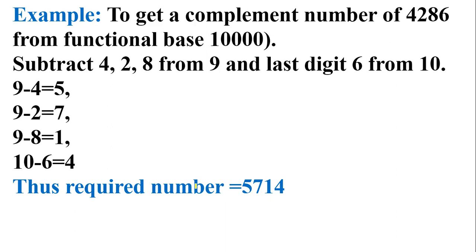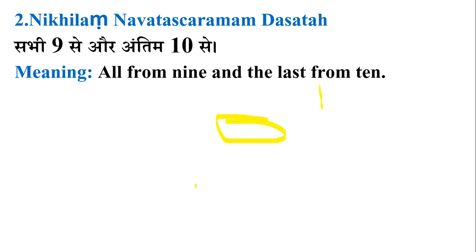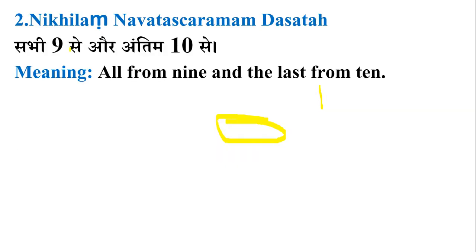Here is the example: to get the complement number of 4286 from a base of 10,000. You take 10,000 as the base and calculate the complement number. According to this second formula, the sutra Nikhilam Navatascaranam, what you have to do is: this sutra says 'all from 9 and last from 10.' So what does it mean? It is telling you to take the first 3 digits and subtract them from 9.